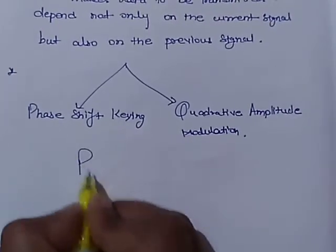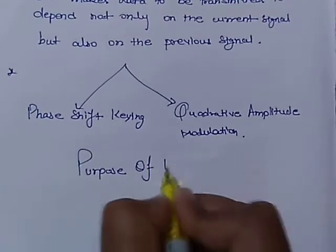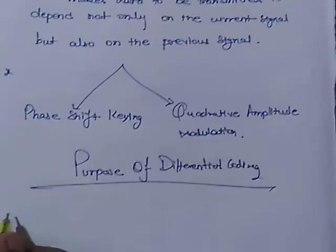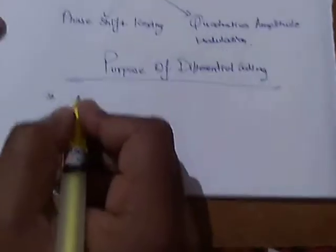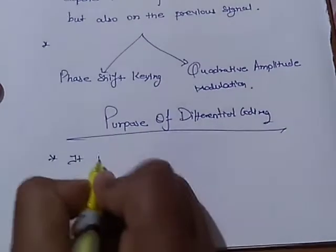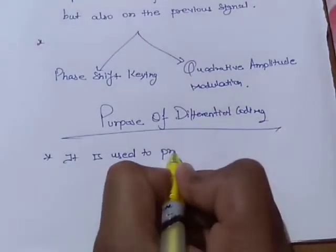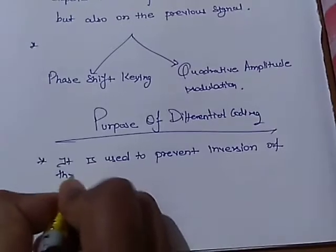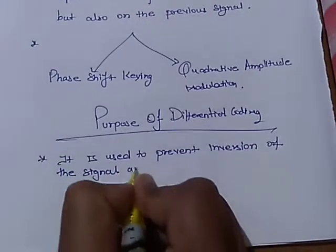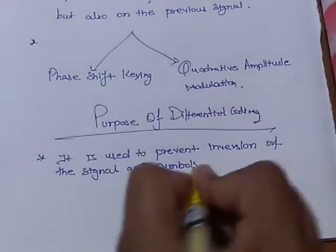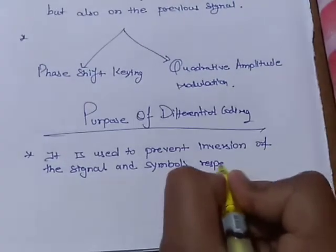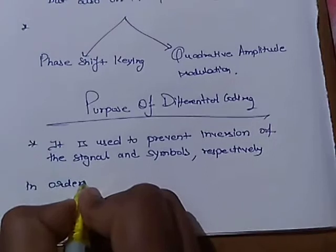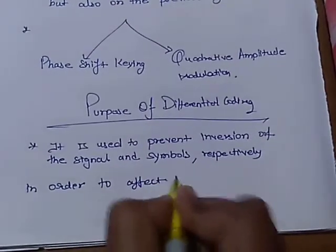Now, what is the purpose of differential coding? It is used to prevent inversion of the signal and symbols respectively in order to affect the data.